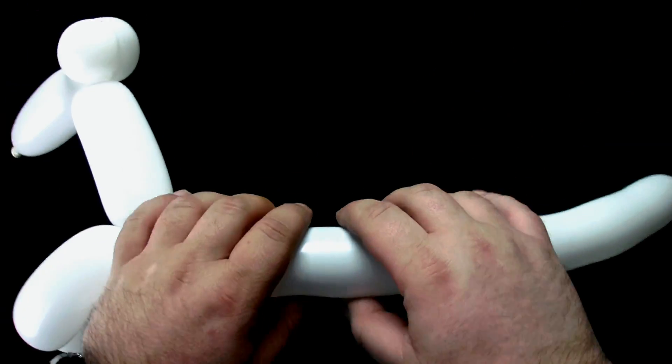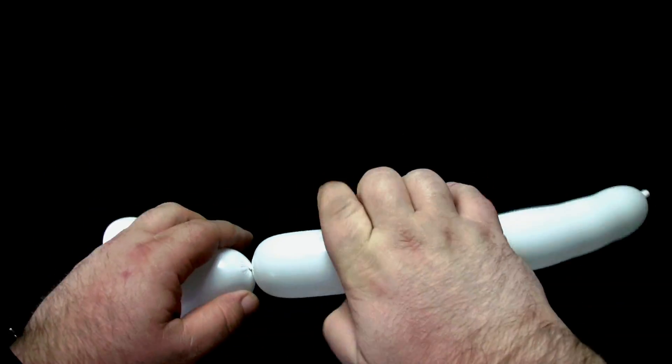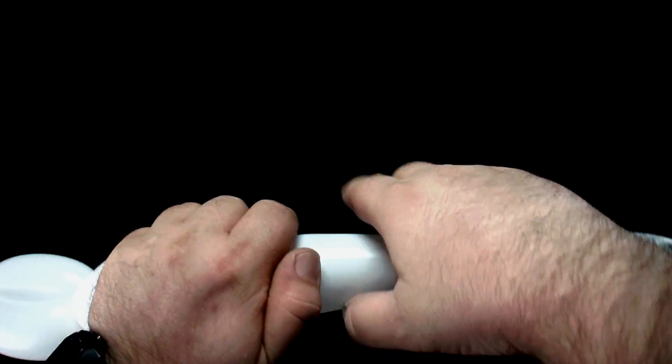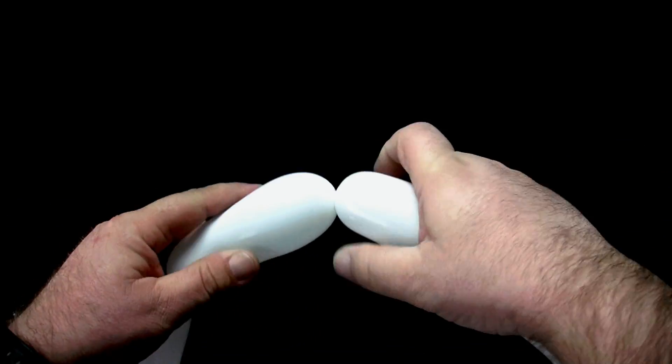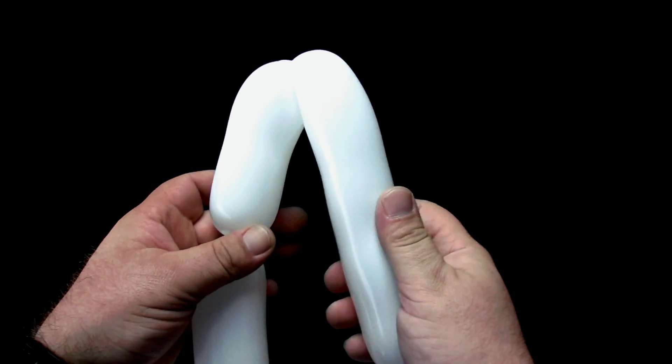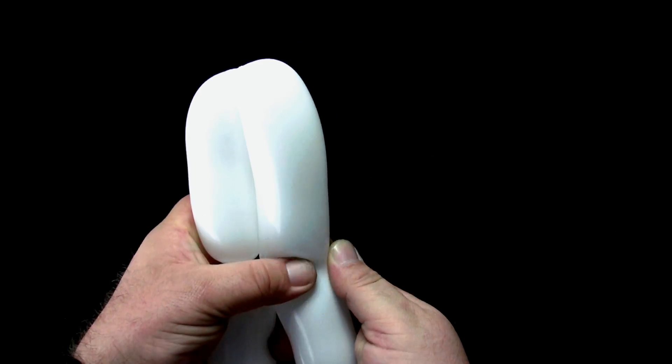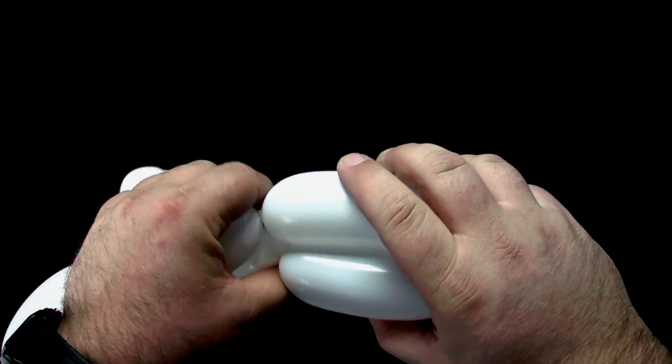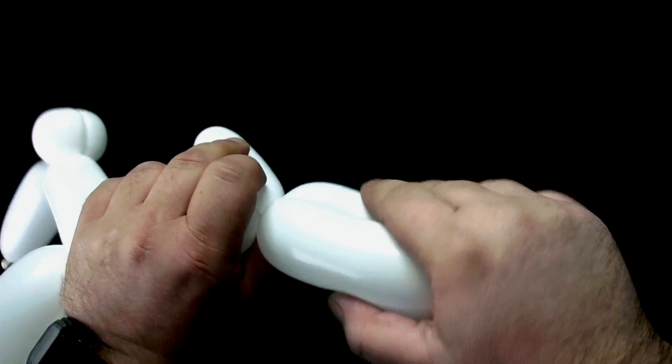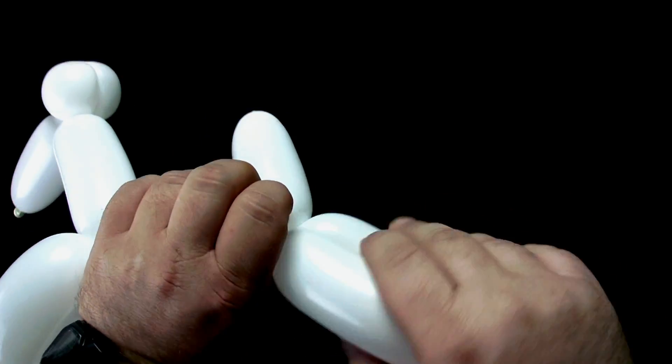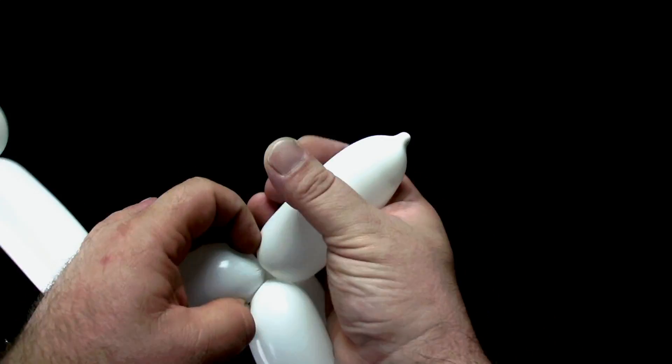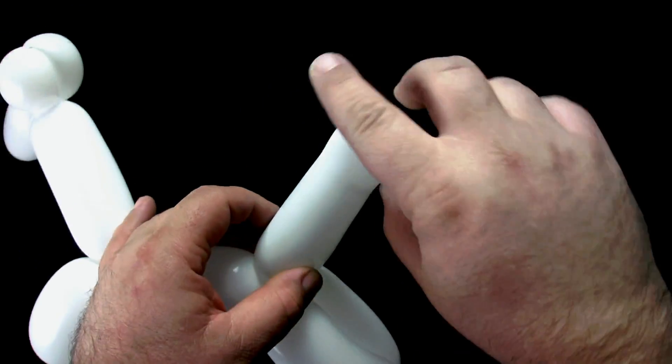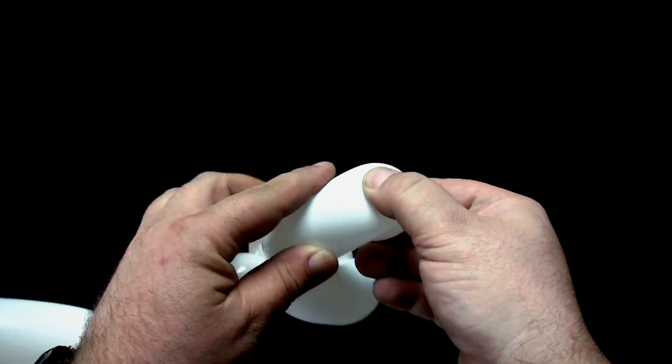Make a five finger bubble for the torso. Twist two five finger bubbles for the back legs. The remainder is the tail. Bend the tail and hold for a few seconds to give the tail a curve.